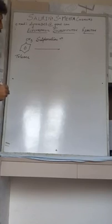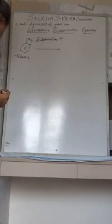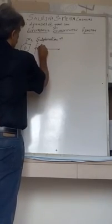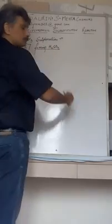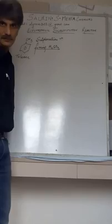You know very well we require oleum, that is sulfuric acid SO3, or you can even consider fuming sulfuric acid. This fuming sulfuric acid will produce a sulfonium ion.